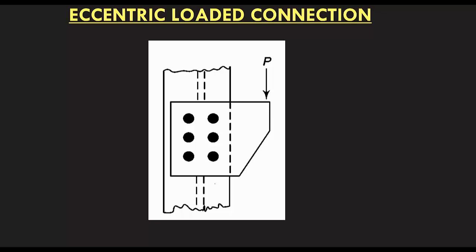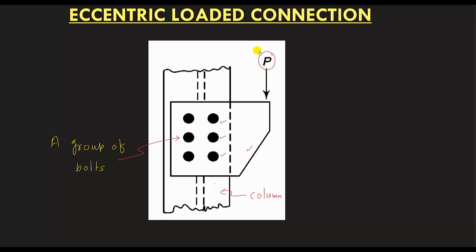Hello Friends! Today we will learn about Eccentric Loaded Connection. Let us consider this as a structure — it has a column and a gusset plate. This gusset plate and column are connected through a number of bolts, which we call a group of bolts. Load P is applied to this gusset plate. First this load will be transferred to the gusset plate, then through these bolts to the column, and finally this load will go to the ground.